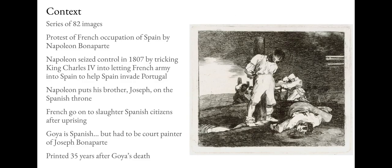In terms of context, this print is part of 82 images. The series deals with Spain and the occupation of Spain by the French under the leadership of Napoleon — not only the occupation, but the reaction of Spanish citizens and their mindset as well. Napoleon, who is in control of France, makes an agreement with King Charles the Fourth, who is the king of Spain at the time.